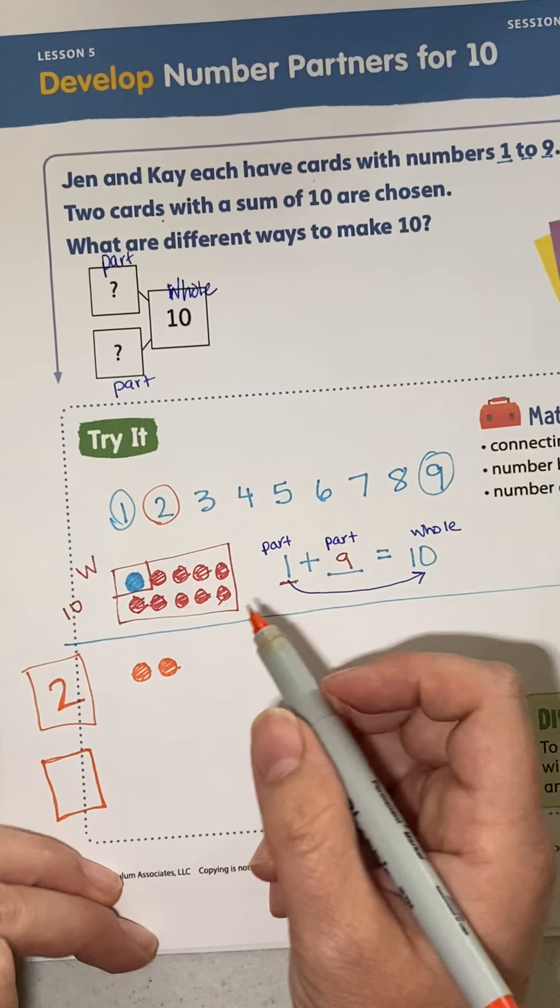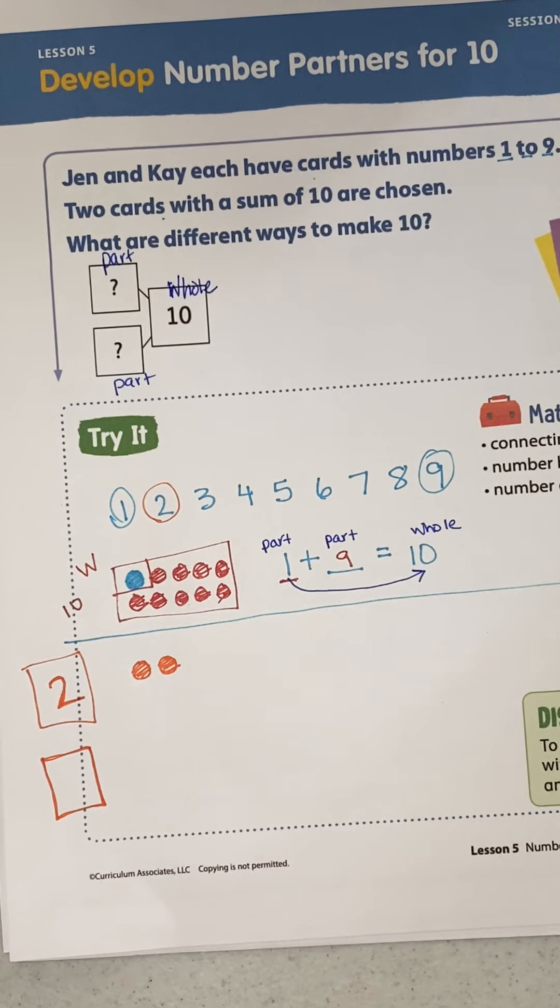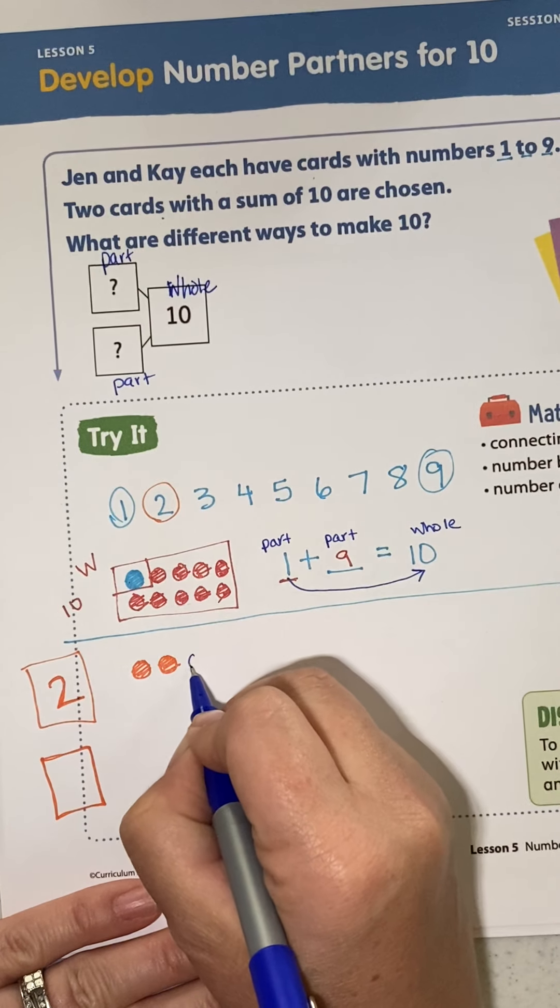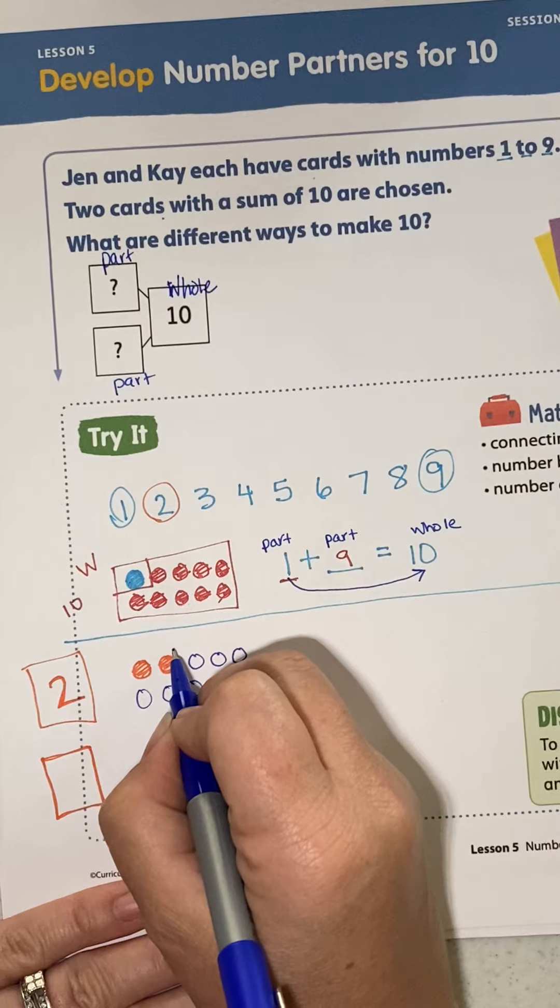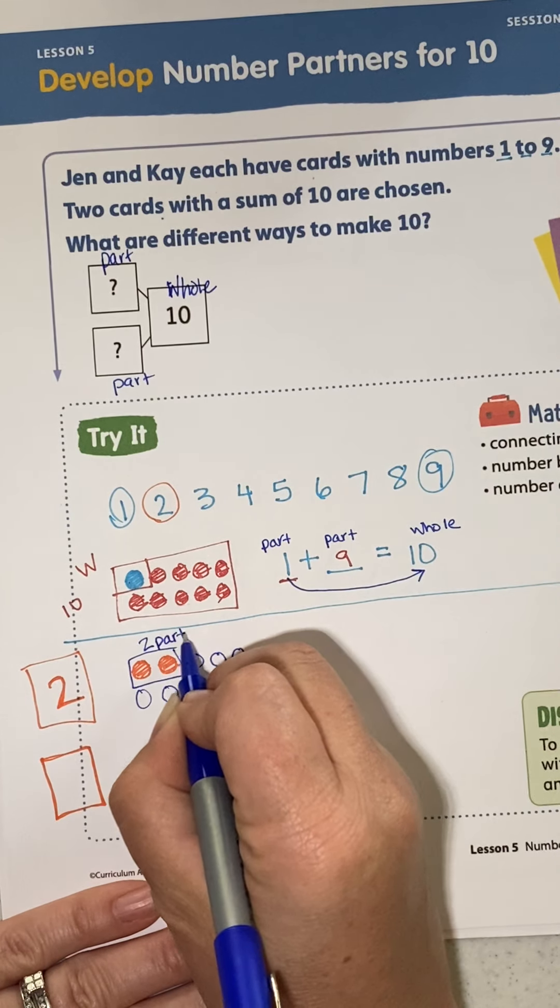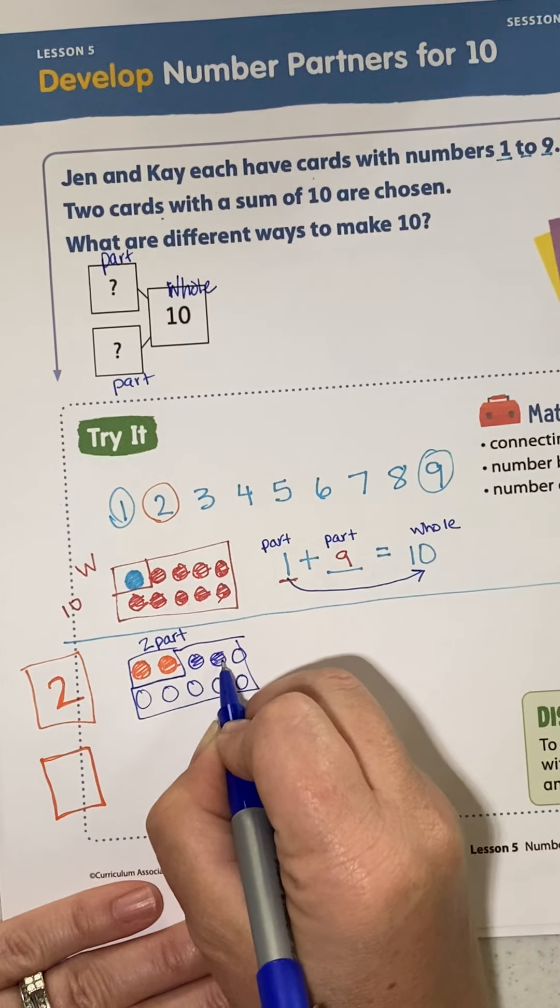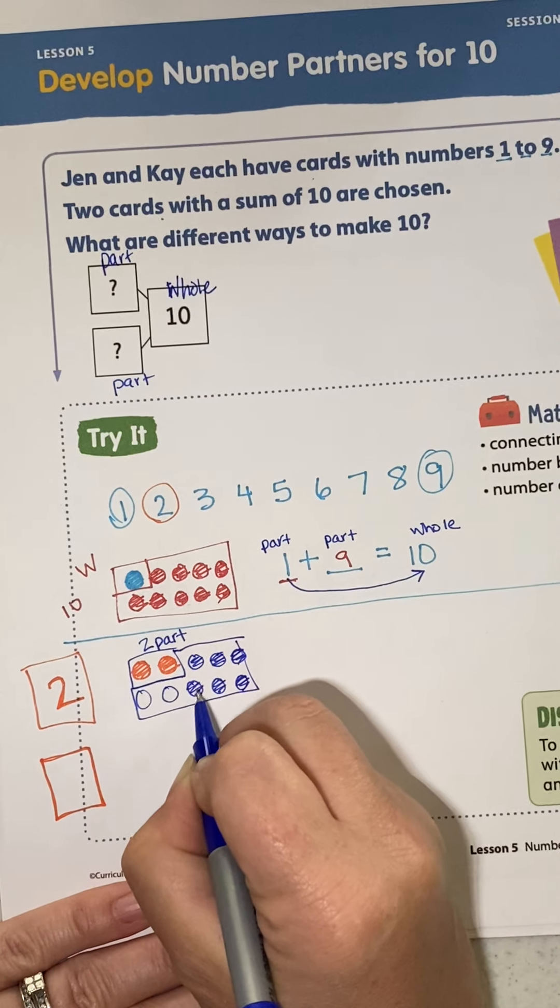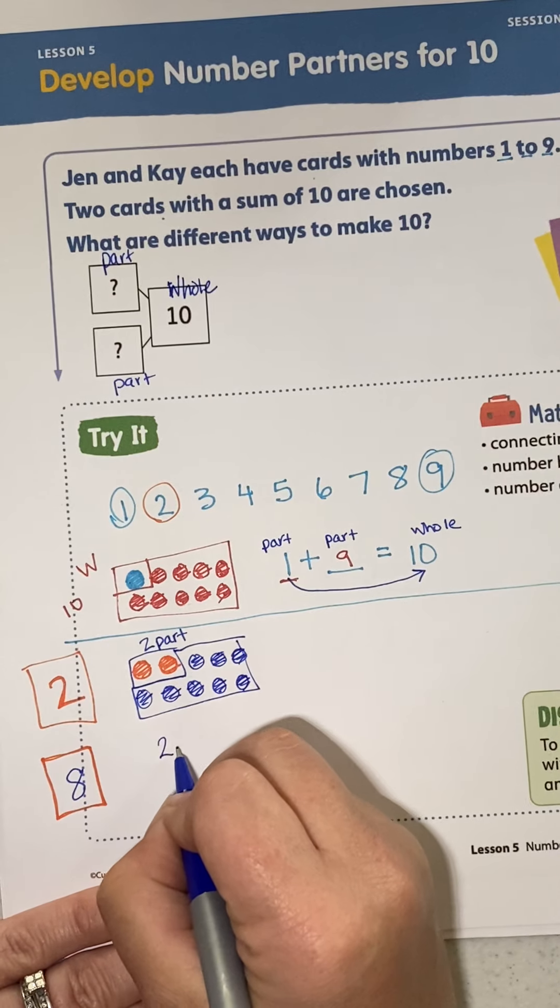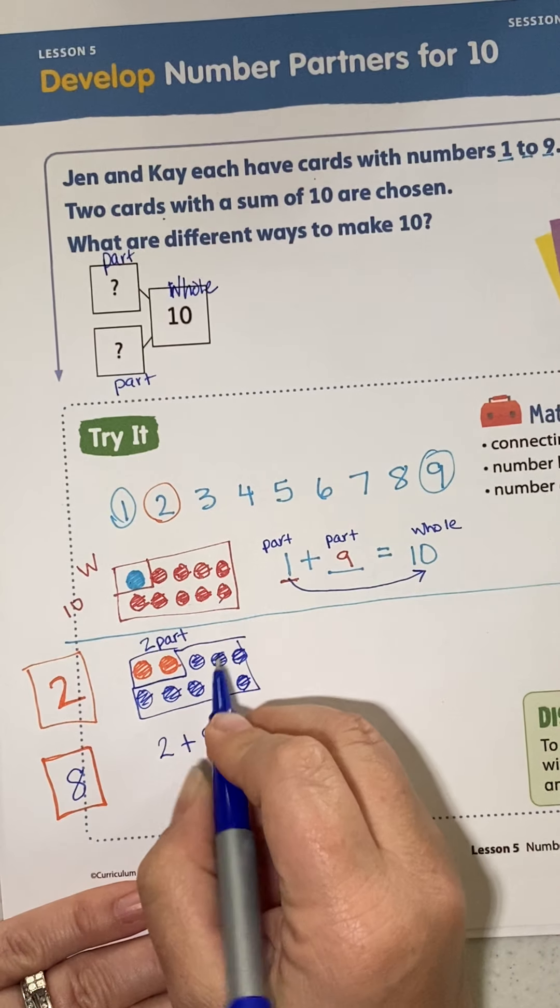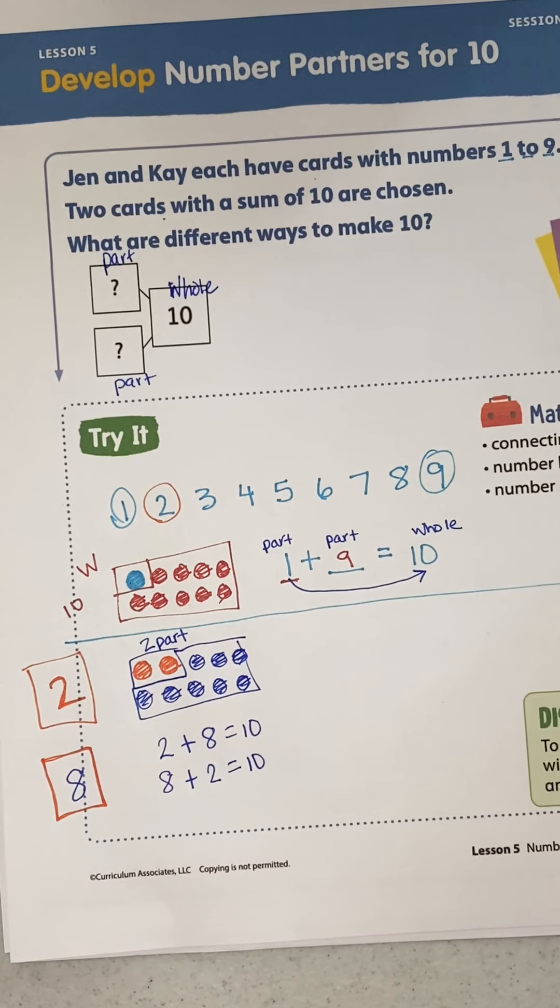What is my other card going to be if I have a total of 10? If the card says 2 and the total is 10, I have to count up to 10, right? 2, 3, 4, 5, new line, 6, 7, 8, 9, 10. So 2 is a part and 1, 2, 3, 4, 5, 6, 7, 8. 8 has to be the other number. So 2 plus 8 equals 10 and 8 plus 2 equals 10.